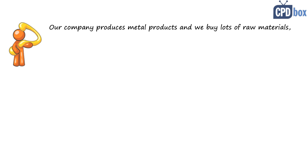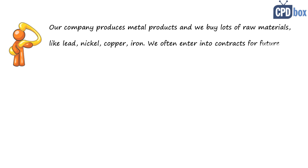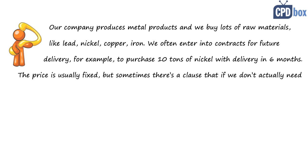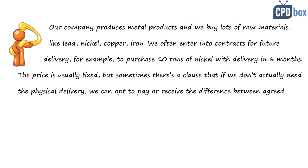Our company produces metal products and we buy lots of raw materials like lead, nickel, copper, iron. We often enter into contracts for future delivery — for example, to purchase 10 tons of nickel with delivery in 6 months. The price is usually fixed, but sometimes there's a clause that if we don't actually need the physical delivery, we can opt to pay or receive the difference between agreed price and the current market price of nickel in cash.